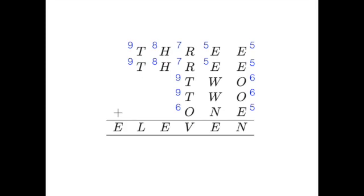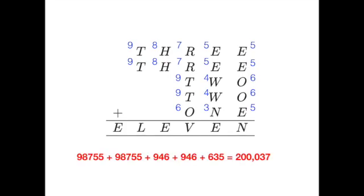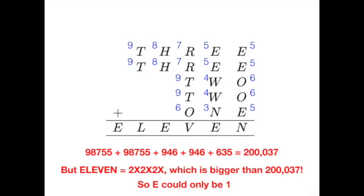At the end of the process, we see that the sum equals 200,037 which is less than the 6-digit number coded by ELEVEN since we need a 2 in both the 100,000th and thousandth digit. Therefore, E couldn't be larger than 2 and so must then be 1.